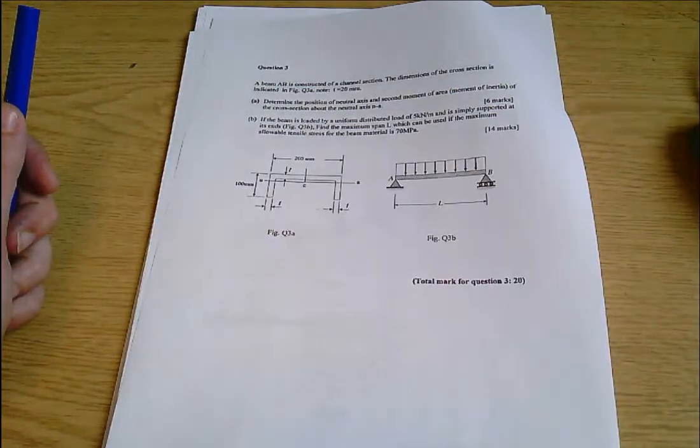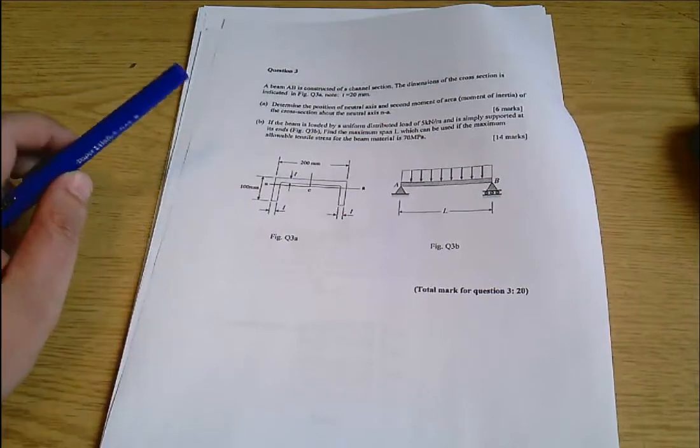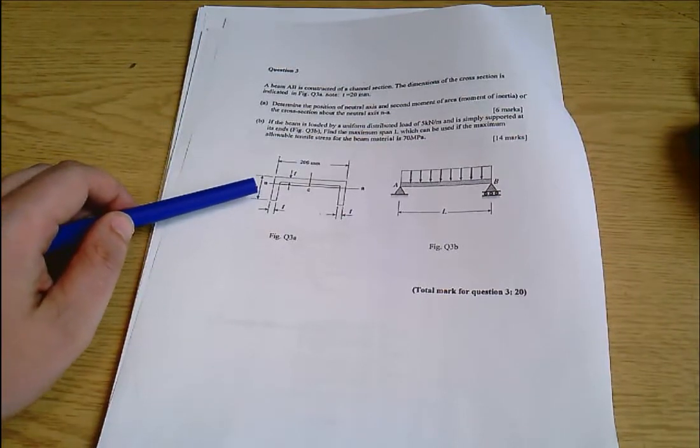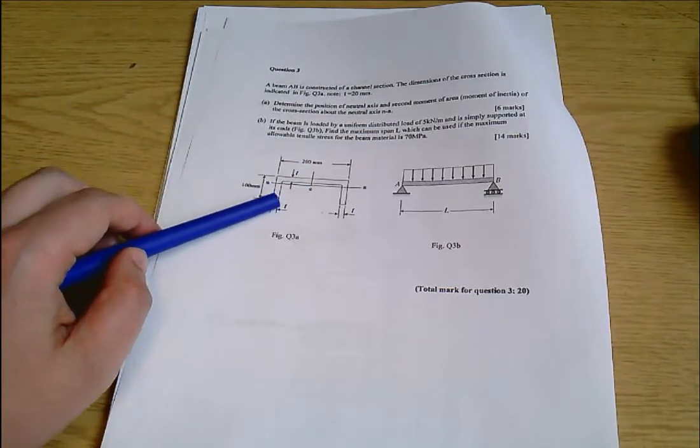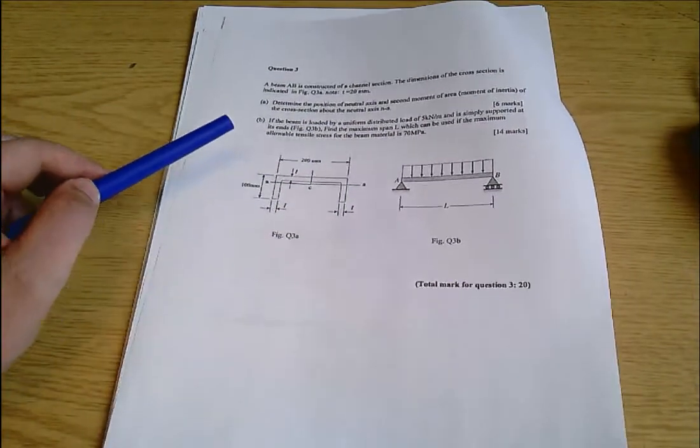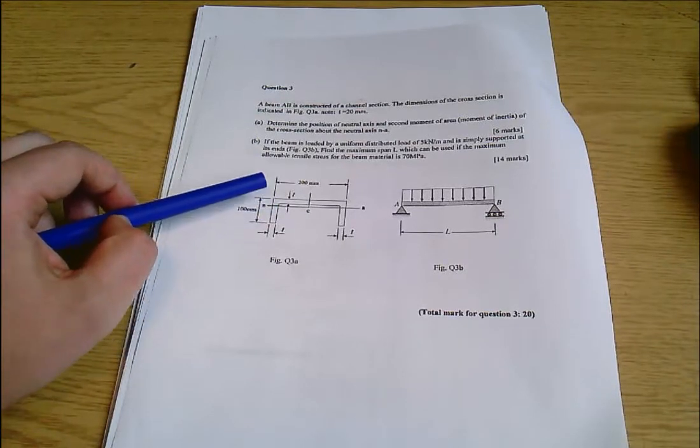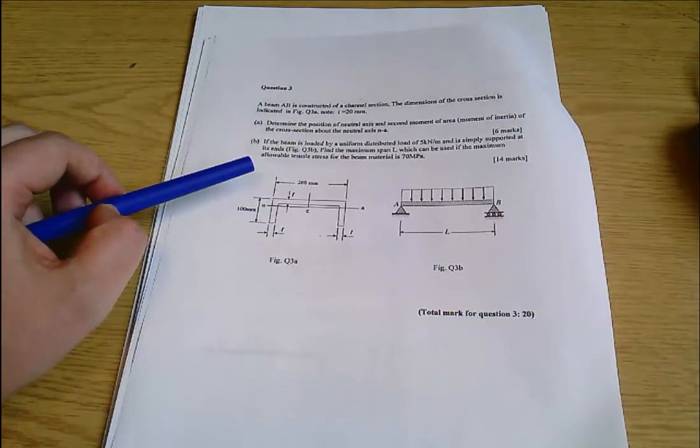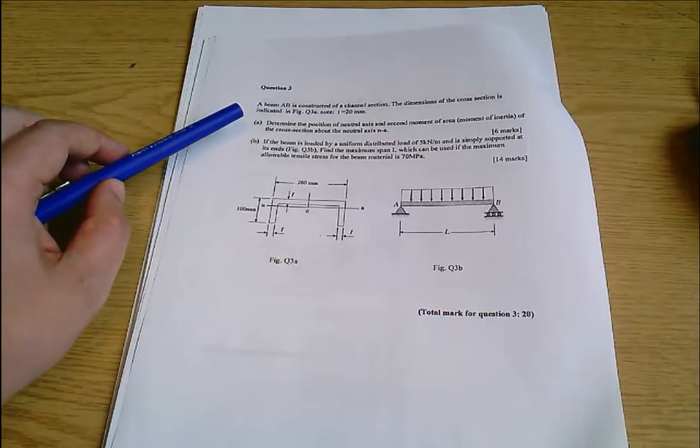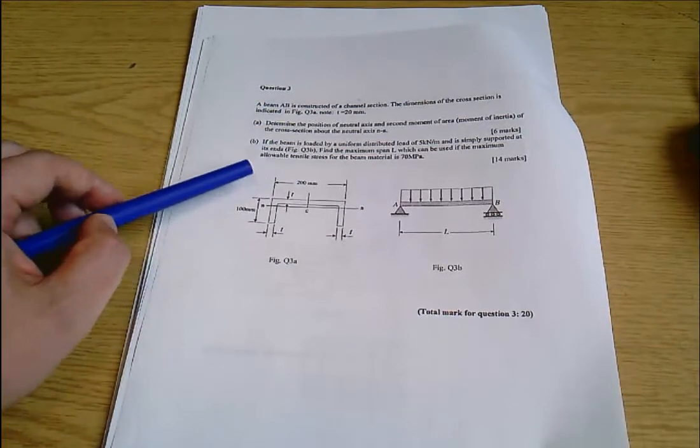This is the ENG 5443 solid mechanics exam from 2018 and this is question 3 which is about bending with a U shaped or an N shaped cross section. We've got these dimensions and we are asked for the position of the neutral axis and the second moment of area of the cross section.